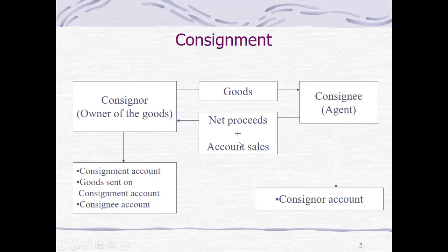There is also an account sales report, sent together with the net proceeds. The net proceeds is the amount net of any reimbursable expenses and commission coming from the consignment contract, which are deducted from sales. The report shows details such as how many units were sold, the unit selling price, total sales, and itemized reimbursable expenses and commission deducted to get the net proceeds.